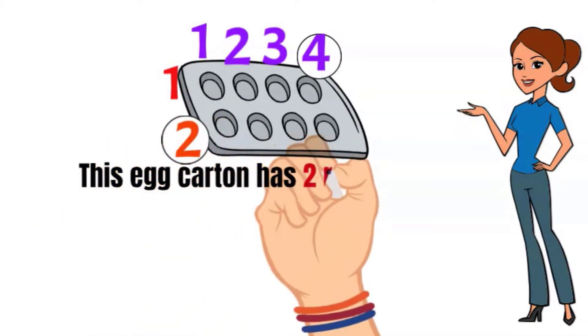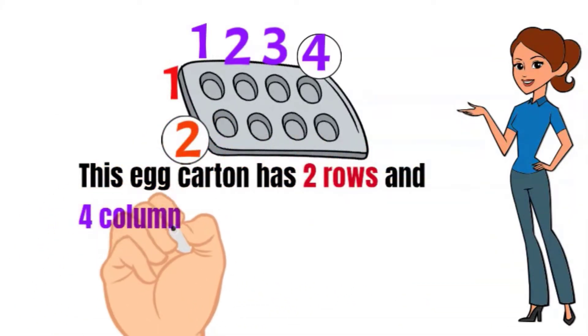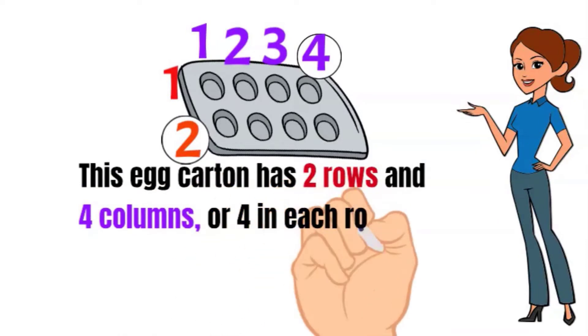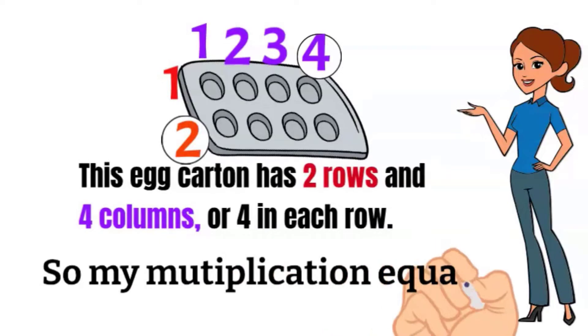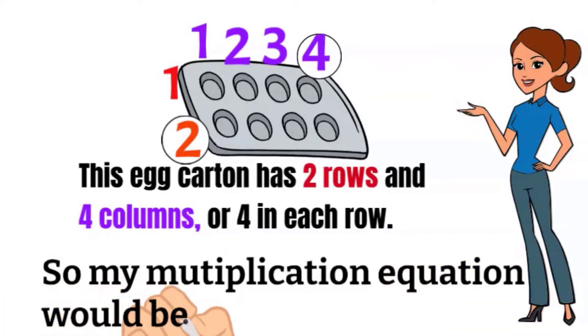So this egg carton has two rows and four columns or four in each row. So my multiplication equation would be two times four equals eight.